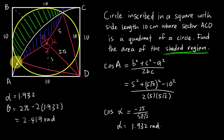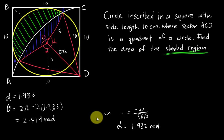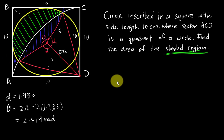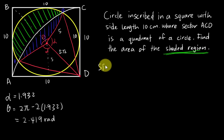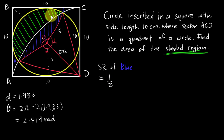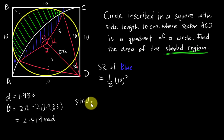Next I need to find the area of the sector and the blue region. I'll find the blue color region first since we already have the triangle dimensions. For the blue shaded region, I use the sector formula: ½r²θ, then subtract both triangles. But first I need to find angle θ₂ — I'll call it alpha 2 — using the sine rule: sin(α₂)/5 = sin(α)/10.